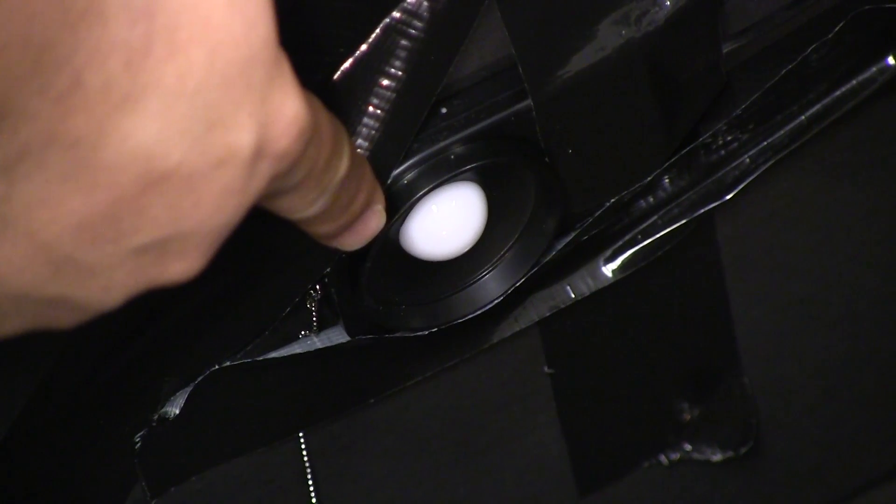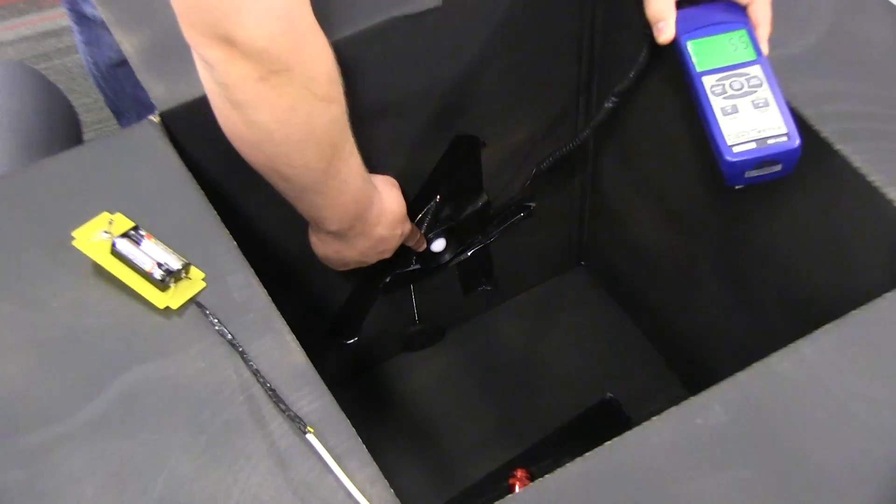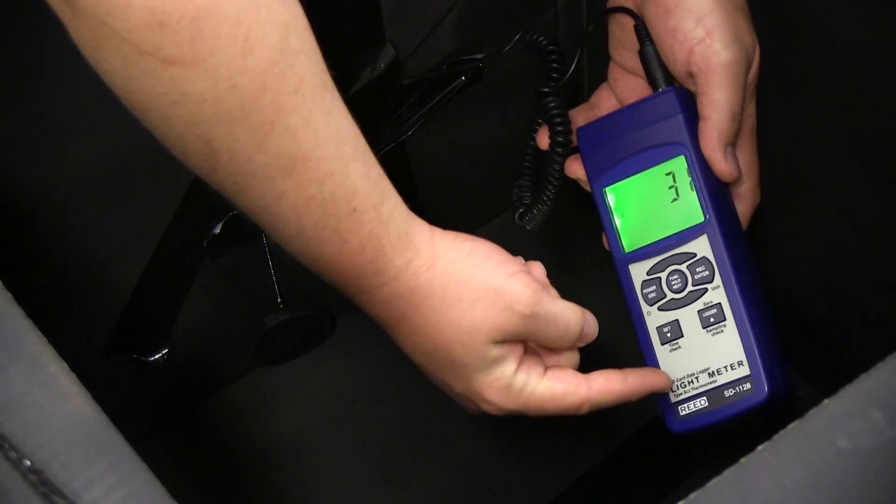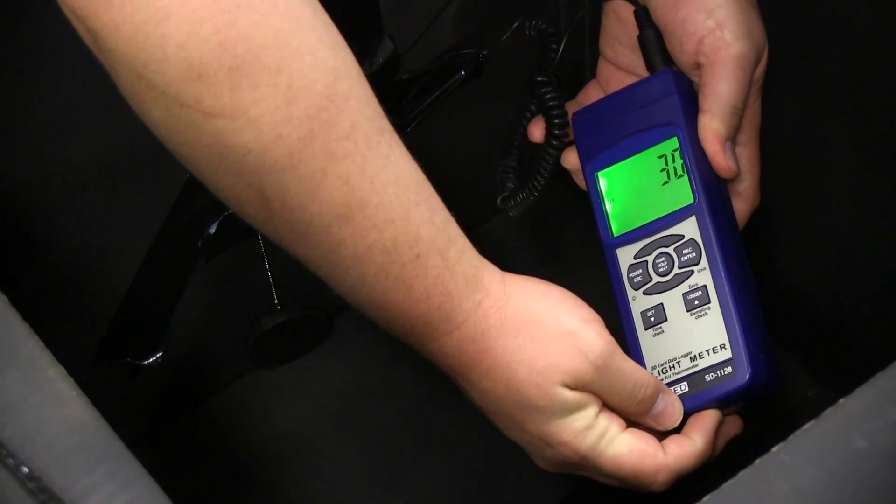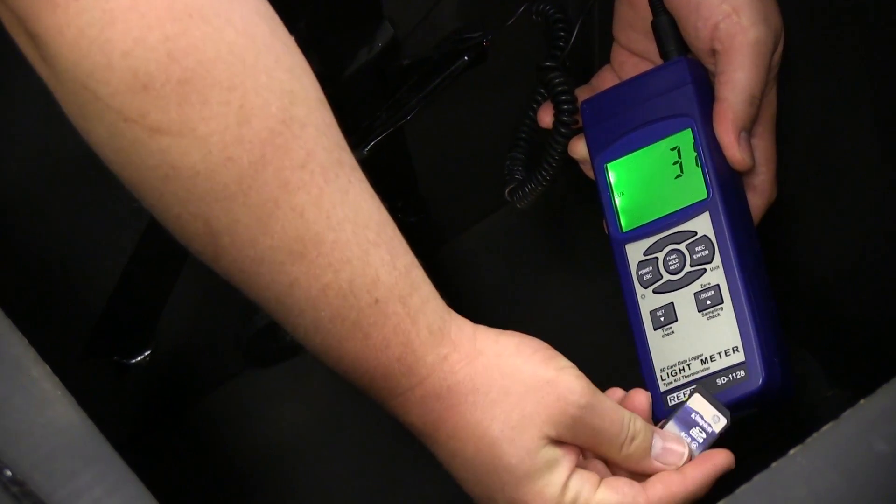We put a light sensor inside to measure the relative light intensity of the flashlight. We then hook up the light sensor to a light meter that records the results into an SD card.